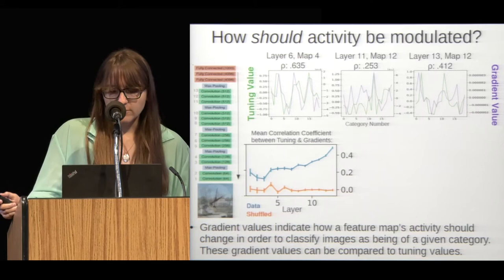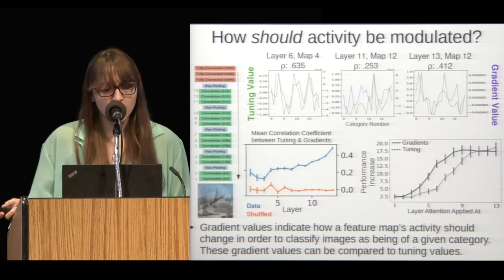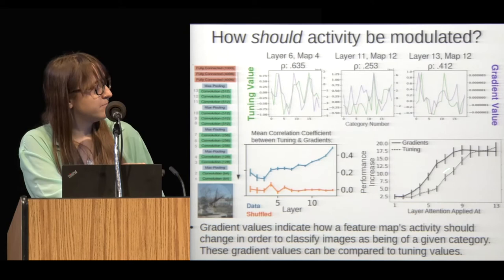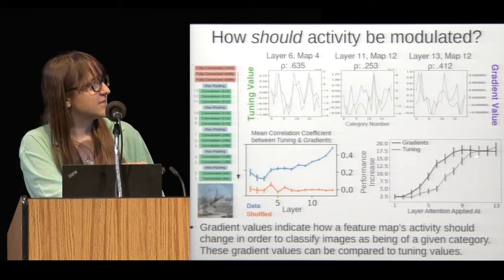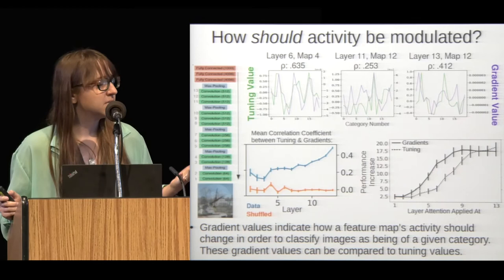So gradient values are similar but not the same as tuning values. When attention is applied according to gradient values, they are better able to enhance performance at medium layers in the network, but reach the same level of performance as the tuning values at later layers — which suggests that the tuning values actually increase performance perhaps as much as could be expected.